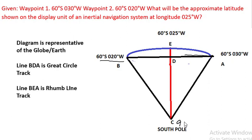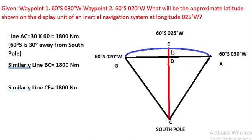Point C is the South Pole, which is 90 degrees south. The distance between A-C and B-C is each 30 degrees, and similarly C-E is also going to be 30 degrees. What we have to find is the distance between D and E, which will be converted to minutes — this is what will be shown on the inertial nav display. We know B-C is 30 degrees, which equals 30 × 60 = 1800 nautical miles.